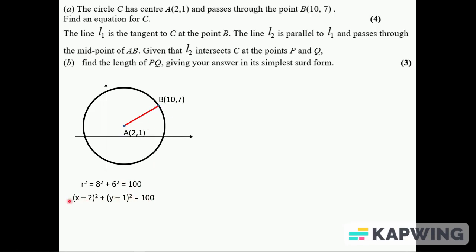The equation of the circle looks like this: (x minus the x value of the center) squared plus (y minus the y value of the center) squared equals the radius squared.